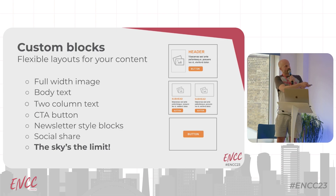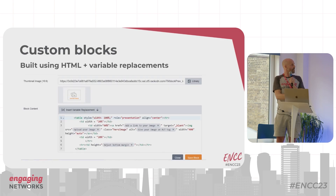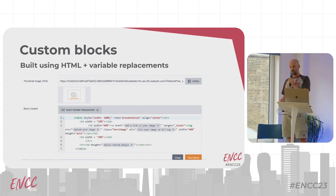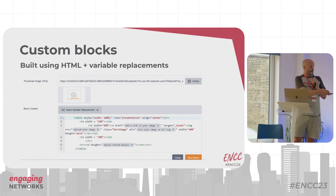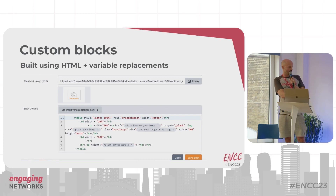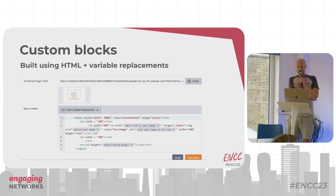On the right-hand side there are example previews we've used for our free and flexible template. This is what a custom block looks like — this is something you'd need HTML skills for, so you might use a partner or in-house HTML capability. You've got a preview image, and inside it's just HTML with some replacements: a link replacement, an alt tag replacement, an image replacement, and one for adjusting the bottom margin.